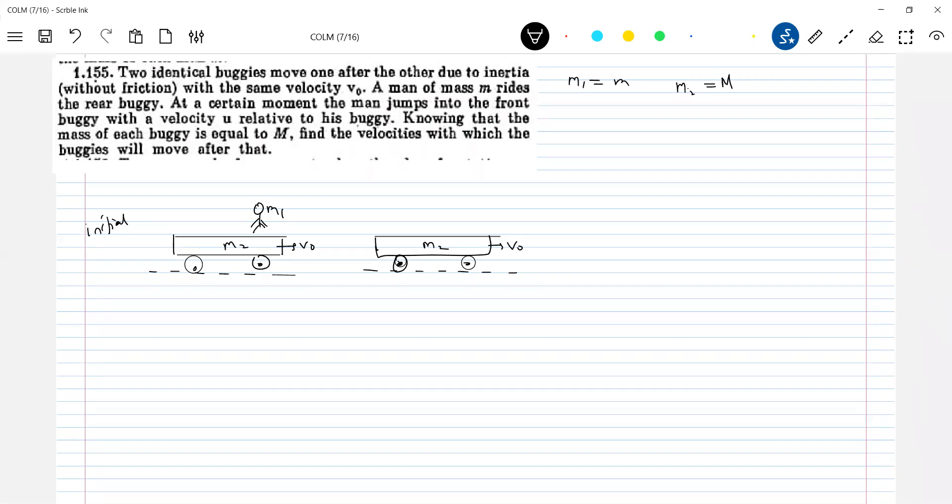At a certain moment, the man jumps into the front buggy with a velocity ur relative to its buggy. Earlier they were addressed, one moving system. If he jumps to other moving system, what condition? Knowing that mass of each buggy, find the velocity with which the buggies will move after that. So now we will make the person jump.